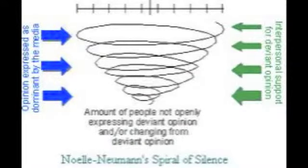According to the spiral of silence theory, the mass media can help create a false, overrated majority. That is, a true majority of people holding a certain position can grow silent when they sense an opposing majority in the media. One criticism of the theory is that some people may not fall into a spiral of silence because they don't monitor the media, where they mistakenly perceive that more people hold their position than really do.